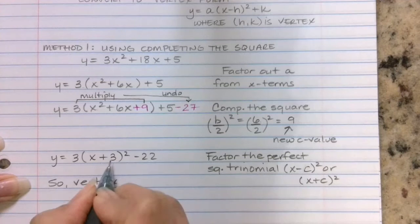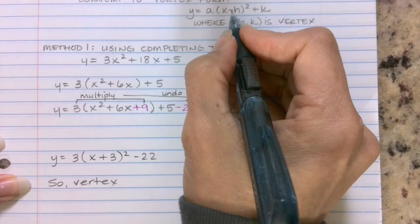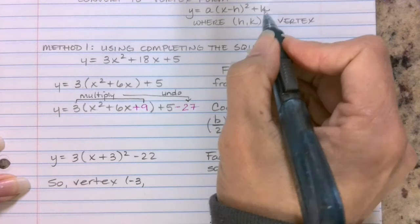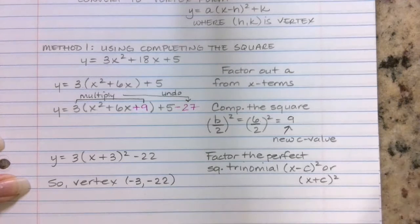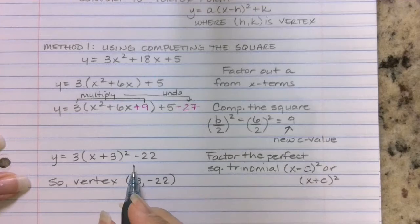So now my format looks like the format I was trying to get of vertex form, and I can then find my vertex because it's in vertex form. So I'm going to write, so the vertex is my (h, k). h, always do the opposite value. Why? Because negative says take the opposite. So that's going to be (-3, -22). So that's method number one, trying to write it in vertex form.